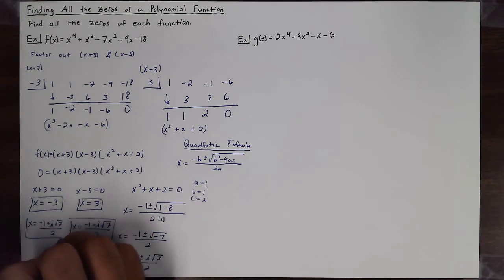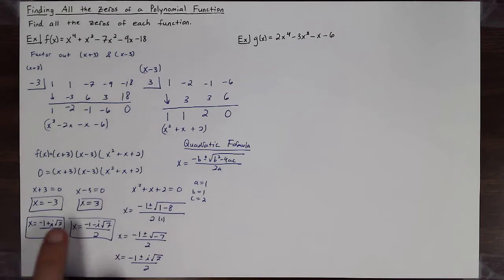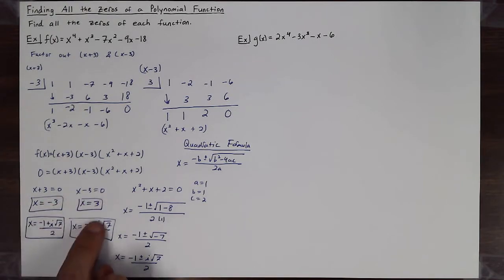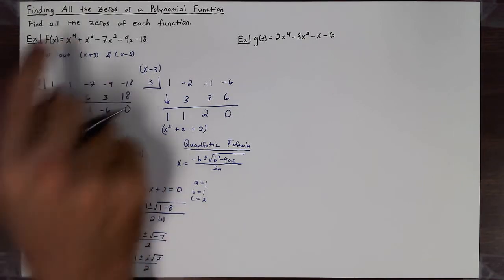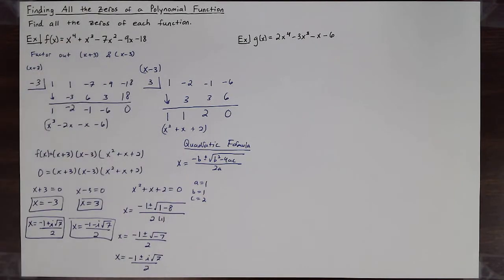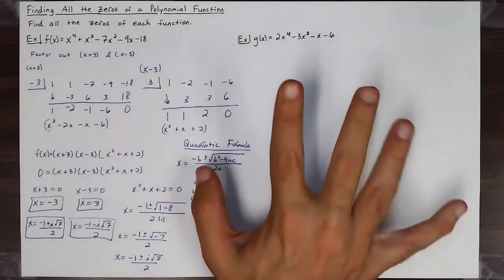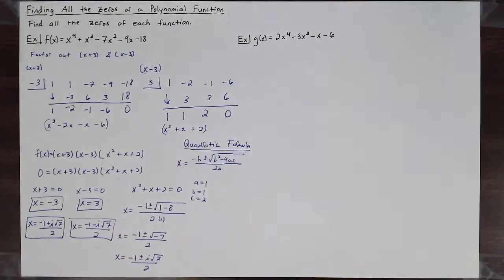By the Fundamental Theorem of Algebra, there are no other roots because I have four roots here, and there are only four roots in the polynomial according to its degree. Let's try this one more time so I can go through that process with you.